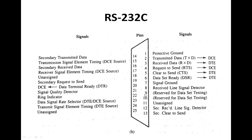Pins 9, 11, 18, and 25 on the asynchronous adapter connector are for the current loop interface and are not part of the RS-232C standard. This type of interface is not common in modern design.